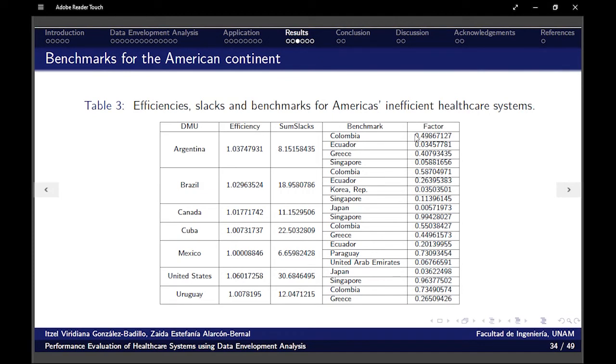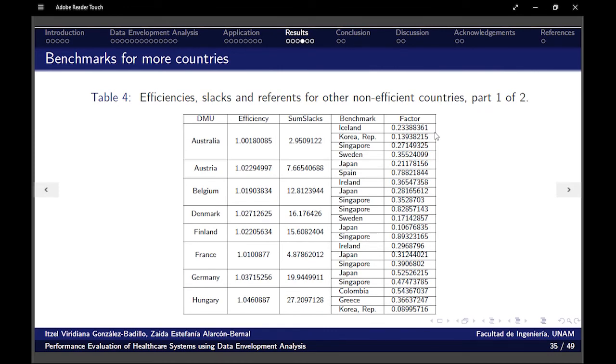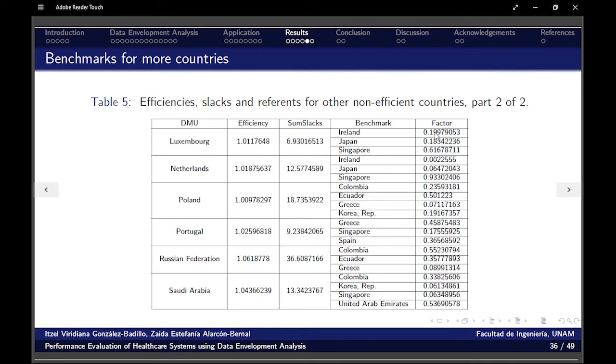So now, in the inefficient healthcare systems case, here we have something where we can see the DMU that we're going to have, the efficiency found for it, the sum of the slacks, the benchmark, the reference, so that country can make an improvement as soon as possible, and a factor that says how important, how relevant that benchmark is for each case. We have the same. This is for Americas country healthcare systems. Here are the rest. This is the table part one of two. Here is part two.